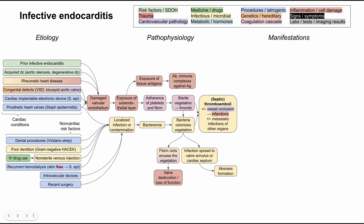Other skin-related risk factors include recurrent hemodialysis, where needles are constantly placed into the body, allowing skin flora like Staph epidermidis to cause infection. Intravascular devices and any recent surgery involving a break in the skin can also cause infection. People who are immunocompromised are particularly susceptible to fungal organisms — Candida and Aspergillus — which represent a different kind of infection from the bacteria discussed so far.